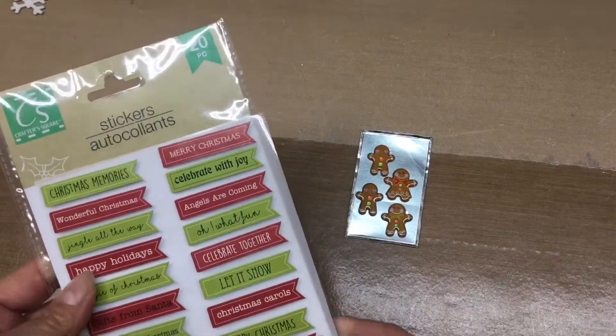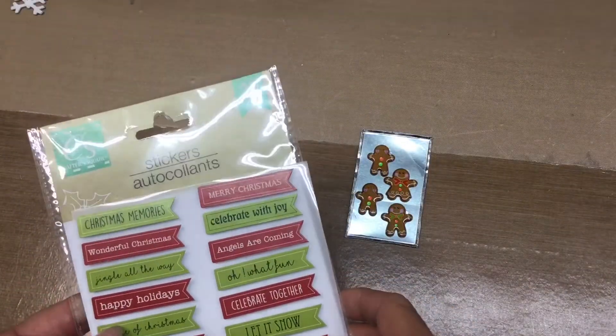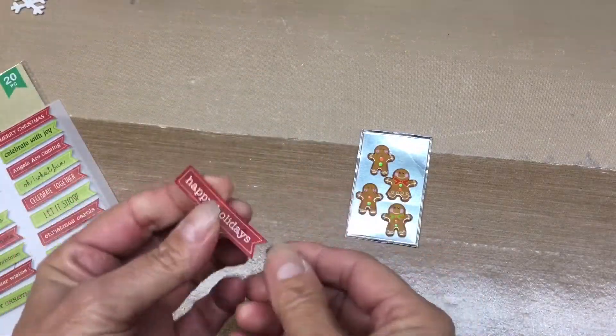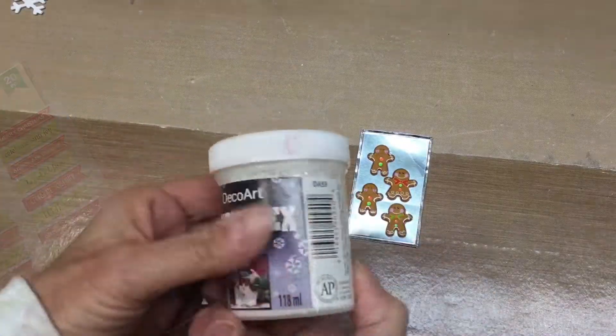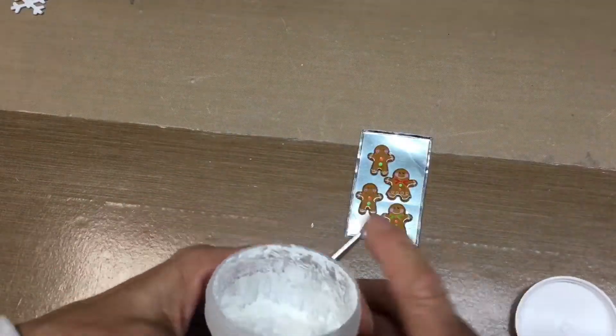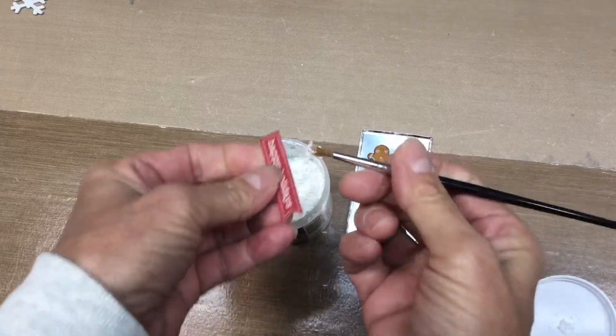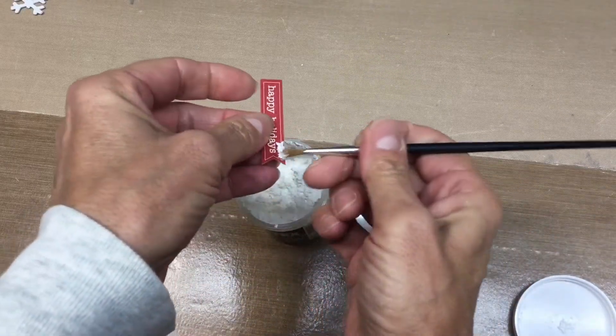And then I grabbed one of these stickers, or if you have a banner die or you want to create your own, it's all good. I just want to use up what I have. So I'm just going ahead and I'm going to put some snow texture on it just to make it give it that little extra added interest.